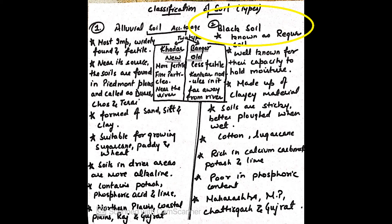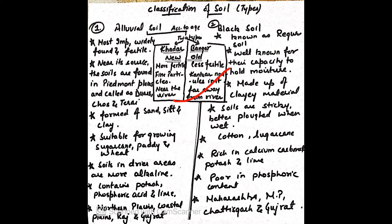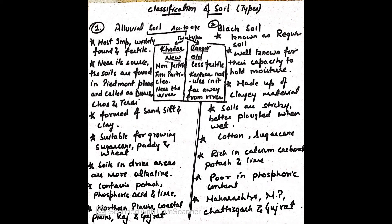Moving on to black soil, known as Regur soil. This soil is well known for its capacity to hold moisture. It is made up of clay material. These are sticky in nature, better plowed when wet, used for growing cotton and sugarcane. Rich in calcium carbonate, potash and lime, but poor in phosphoric content. Areas: Maharashtra, MP, Chhattisgarh, Gujarat.